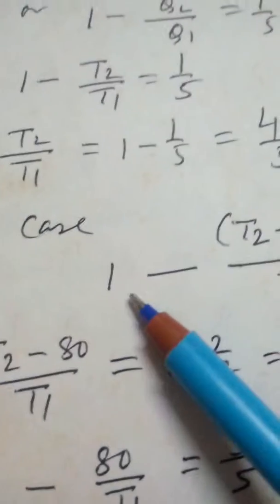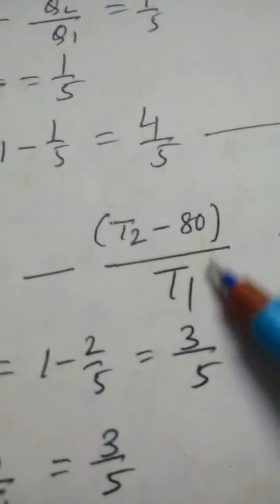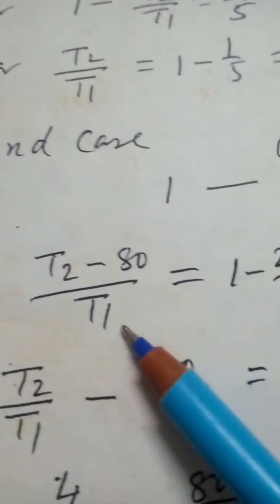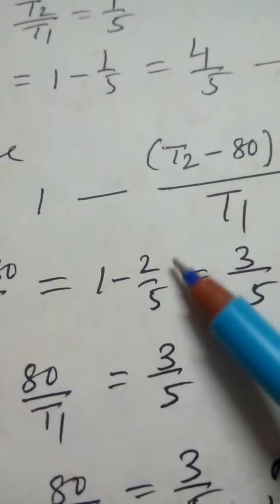And in the second case, 1 - (T2 - 80)/T1 = 2/5. So, T2 - 80/T1 = 1 - 2/5 = 3/5.